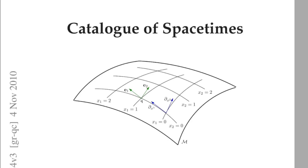We're going to proceed to talk about Riemann normal coordinates. I wanted to step back a little bit and go back to this old catalog of spacetimes. We talked about this in the earlier part of the lecture, and our goal is to understand it — to go through the catalog of spacetimes, understand everything in there. If you can do that, you're certainly knowledgeable about general relativity.